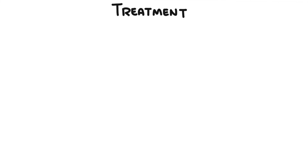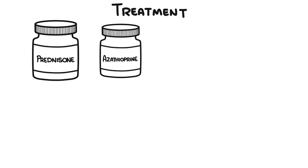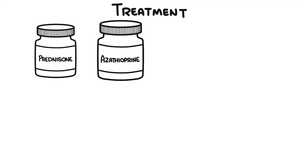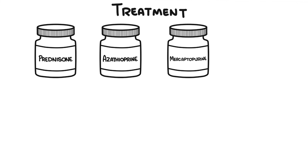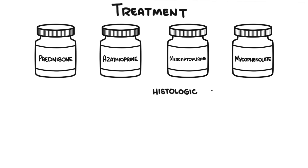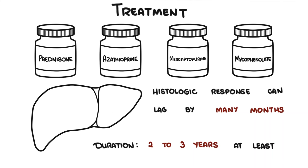Once autoimmune hepatitis is diagnosed, treatment should be started and there is often a dramatic response. Treatment includes prednisone and azathioprine for most patients. Prednisone monotherapy is less preferable due to side effects, and azathioprine also requires monitoring due to cytopenias. Other treatment options include immunosuppressants such as mercaptopurine or mycophenolate. Histological response can lag by many months, and the duration of treatment should be two to three years at least before considering withdrawal. A liver biopsy is also recommended to assess histological response before stopping treatment. Liver transplantation is considered for those with more aggressive disease who do not respond to treatment.